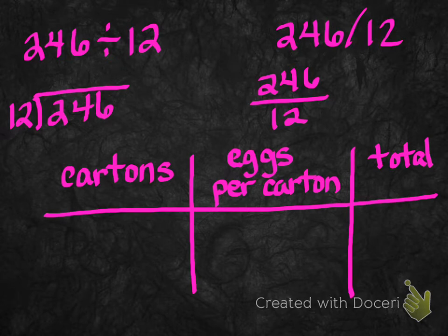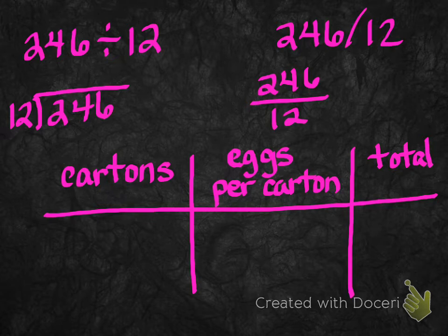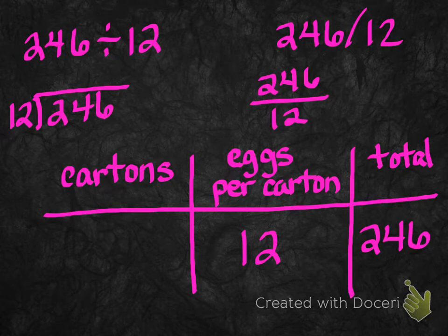So we're going to use a multiplication division chart like we've done in the past and we're going to fill in what we know. We know that there's 12 eggs per carton, and we know that there's 246 total. What we're trying to find is how many cartons.